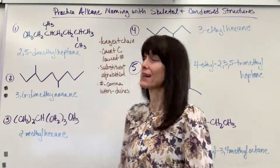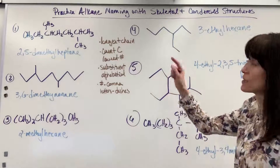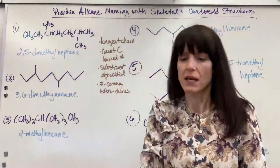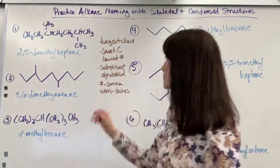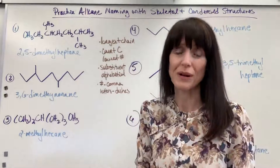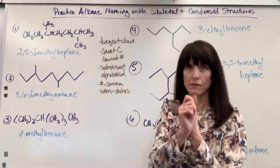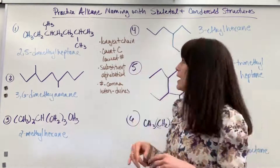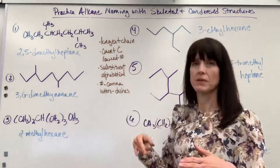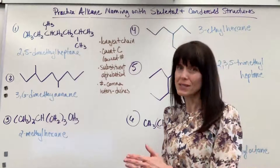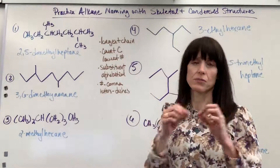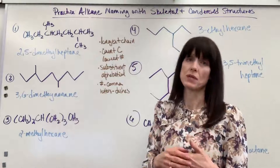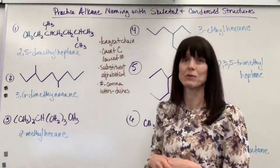Hi everybody! We are going to practice naming alkanes using both the skeleton and the condensed formulas. I wrote here in brown just a quick overview of how to name our alkanes. You're looking for the longest chain of carbons — it doesn't have to be straight, it can be bent. Count the carbons so that you always give the lowest numbers. Write substituents in alphabetical order, and remember we use a comma between numbers and dashes between letters.